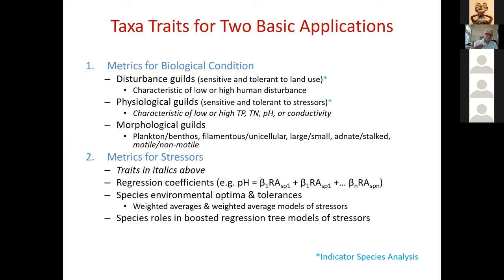Historically, regression coefficients have been used in simple regression models for predicting pH based on relative abundance of species in the habitat. Optimum tolerances of species also become traits. More recently, people in Scandinavia have used boosted regression tree models to extract species traits for predicting stressor conditions.